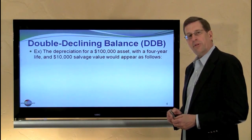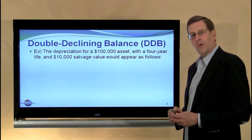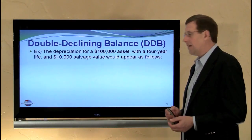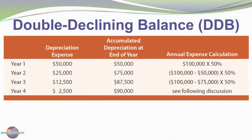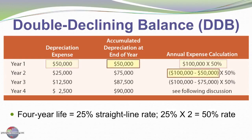Let's look at an example — the same asset we looked at in a previous module with straight line. It has a $100,000 cost, a $10,000 salvage value, and a four-year useful life. With a four-year service life, the straight-line rate is 25% per year. So twice the straight-line rate — the double declining balance rate — is 50%. We take the initial asset cost of $100,000 times 50% to get the first year's depreciation expense of $50,000.